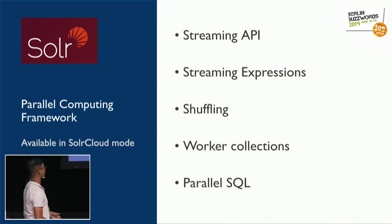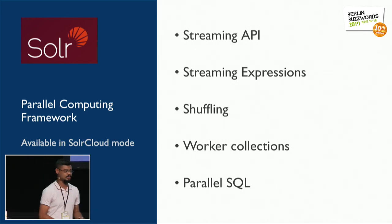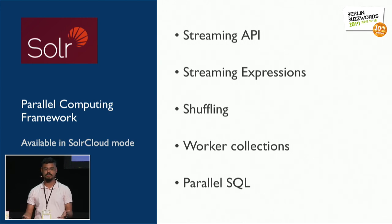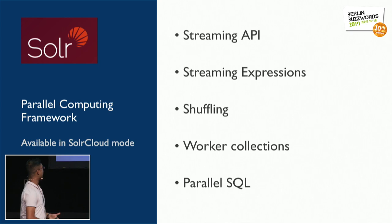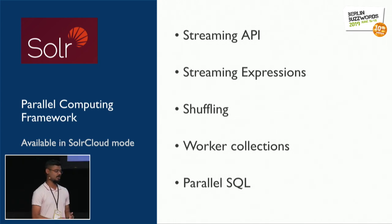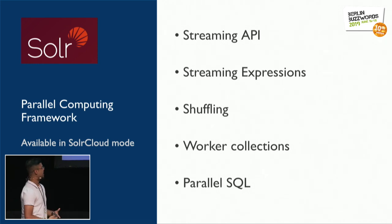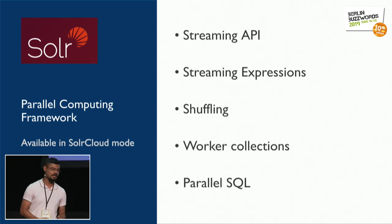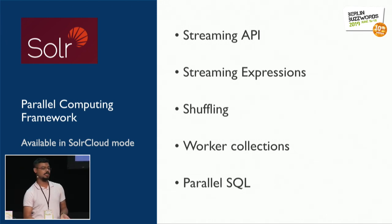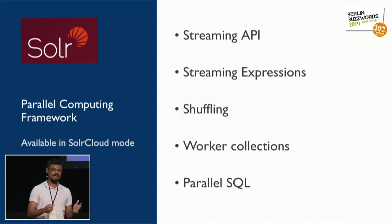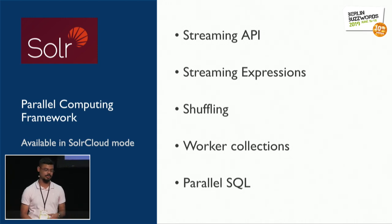The elements on the right-hand side comprise the parallel computing framework of Apache Solr — an open source search engine built on top of the Apache Lucene library. This parallel computing framework is only available in SolrCloud mode, the distributed mode of Solr. We'll discuss the first four elements, while the last, parallel SQL, is a wrapper built on top of streaming expressions. Whatever SQL query you provide to Solr gets converted to a streaming expression implicitly and executed against the servers.